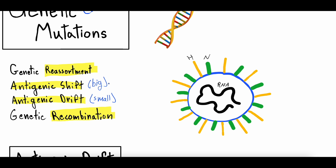Whereas with shift, if you have half of the virus changing, there's just a higher likelihood that within those changes there's something that could lead to that virus infecting humans, causing more severe disease, being more transmissible, or what have you. This overlaps with reassortment and recombination, which we'll talk about. We're going to be using a viral model modeled after influenza, with H and N receptors — hemagglutinin and neuraminidase — and RNA genetic material inside.